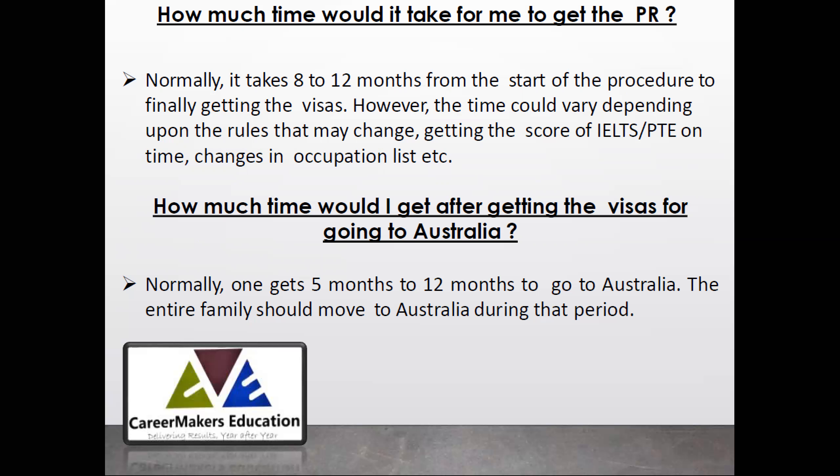After getting a visa, you usually have 5 to 12 months of time in which to migrate to Australia. So if you get your visa in, say, June 2020, you have 5 to 12 months to actually travel to Australia. You don't need to travel the very next day. You can go first yourself and then call your family — that is very much possible.